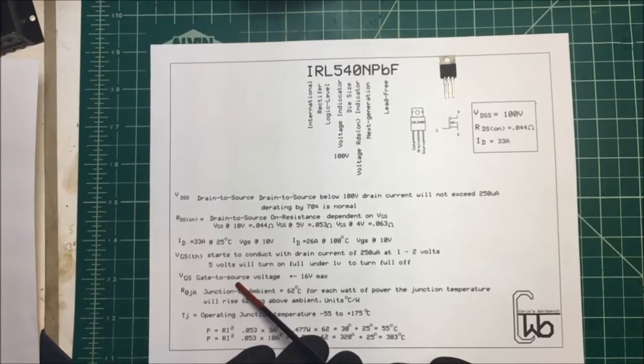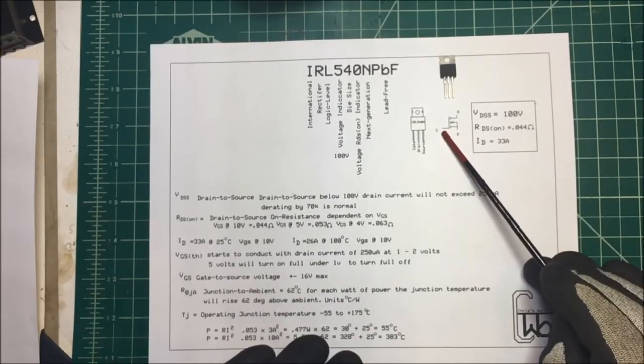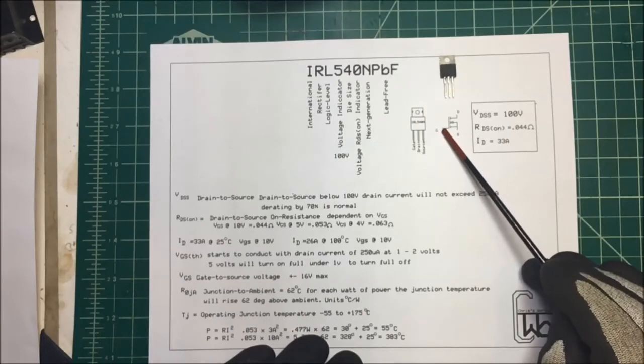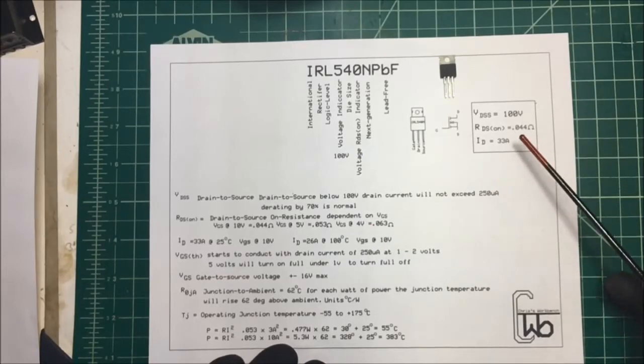Now the VGS, the gate to source voltage, can be up to 16 volts. So if you wanted to, you could turn it on with 10 volts or even 12 volts if you want.